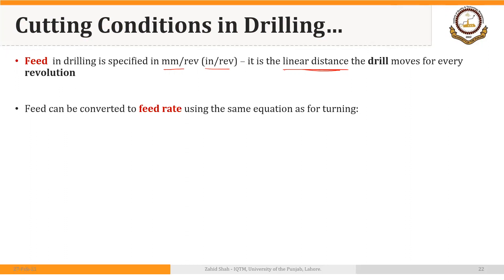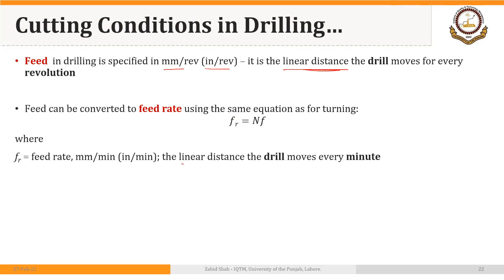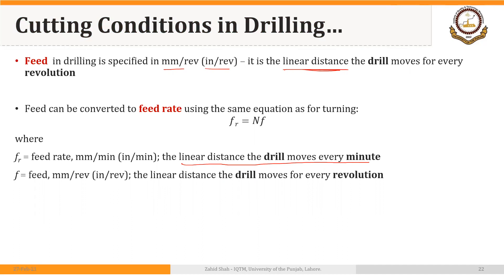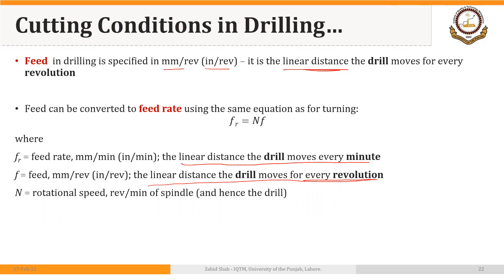This feed can be converted to feed rate using the same equation as for turning: feed rate is equal to RPM multiplied by feed. The feed rate is the linear distance the drill moves every minute — in other words, it is the speed of the drill in the linear direction. The feed is in millimeters per revolution or inches per revolution, and N is the rotational speed in RPM of the spindle and hence the drill. Everything — cutting speed, feed, feed rate, RPM — all relates to the twist drill.